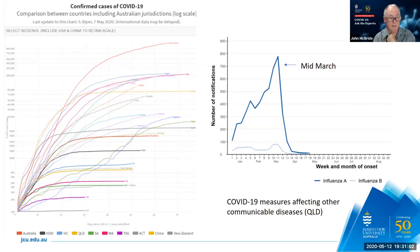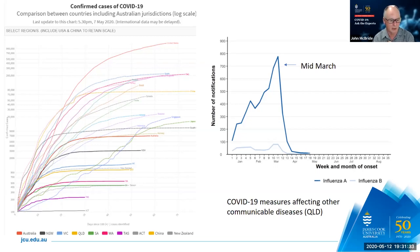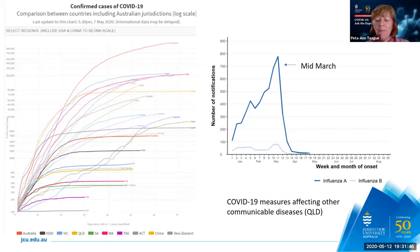Briefly on influenza — from the latest Queensland report, after mid-March the influenza notifications just tanked completely. This is another indication of how effective our self-isolation and social distancing has been, because there is basically no influenza at the moment.